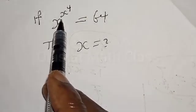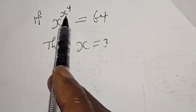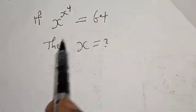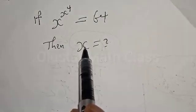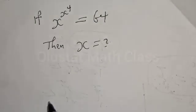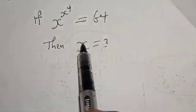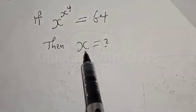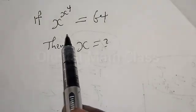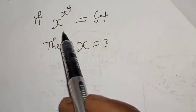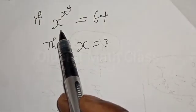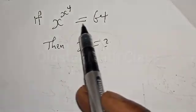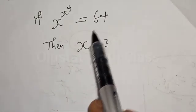If s raised to the power s raised to the power 4 is equal to 64, then s is equal to what? Hi everyone, welcome to my class. In this class we want to find the value of s from this given equation: s raised to power s raised to power 4 equal to 64.